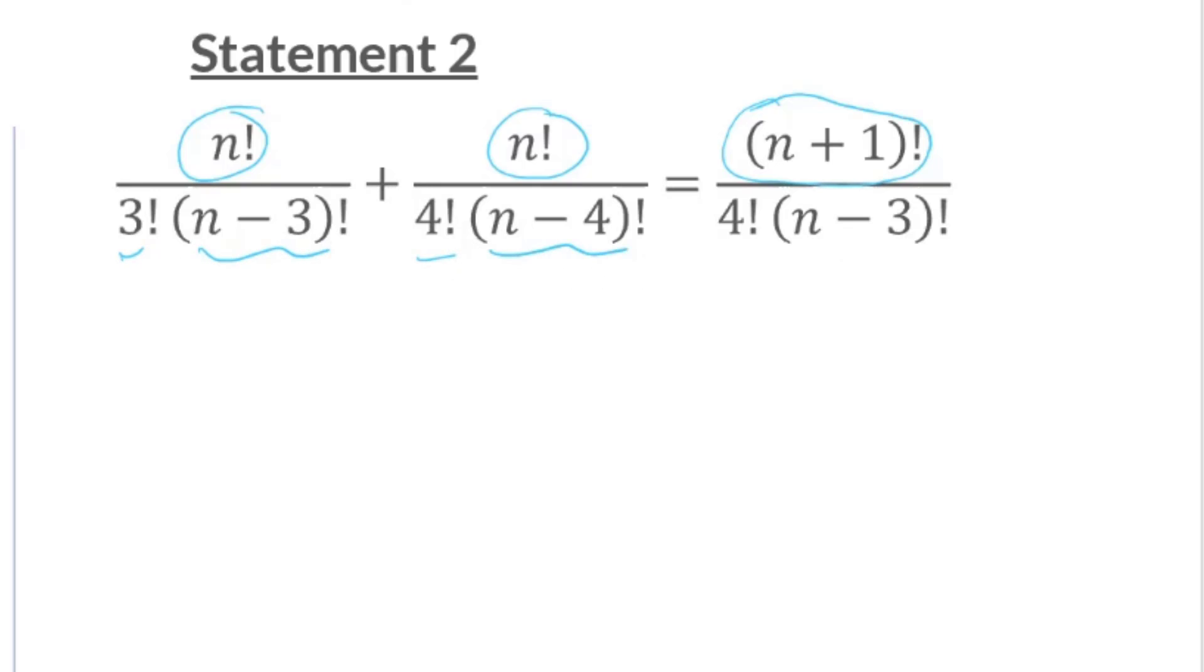N minus 3 factorial, N minus 4 factorial. The same thing, you have similar stuff, N minus 3 factorial. So you can easily factorize the left hand side of the equation and then take out your common denominator. So let's start that.